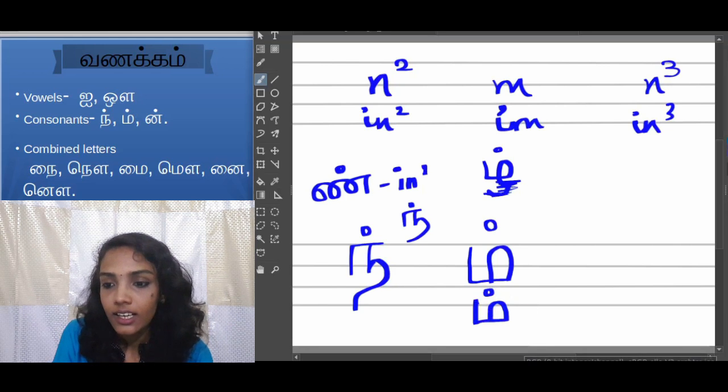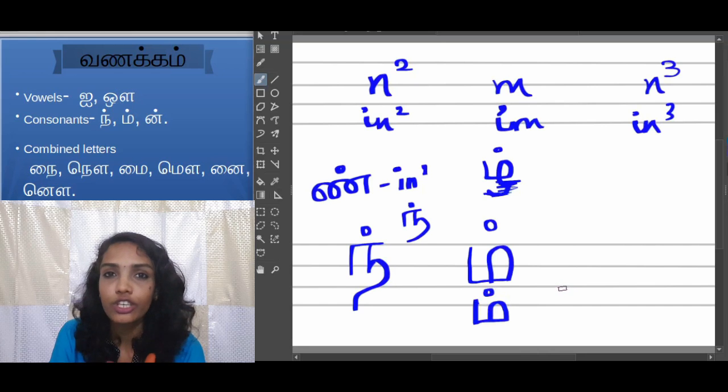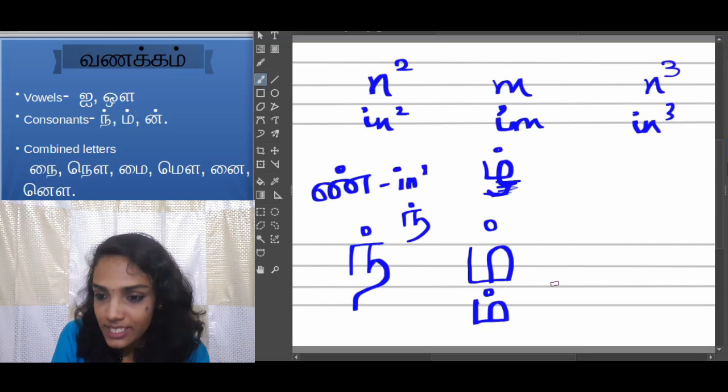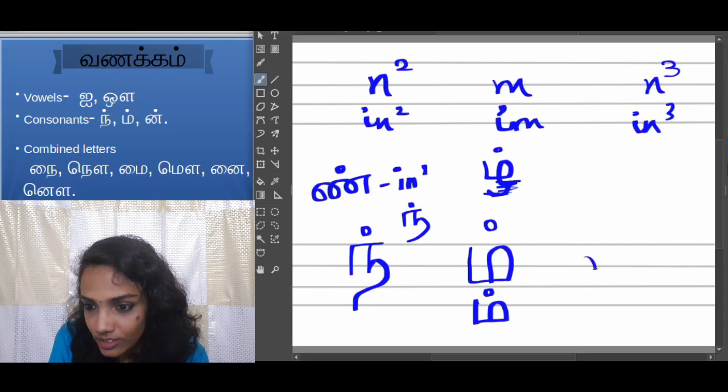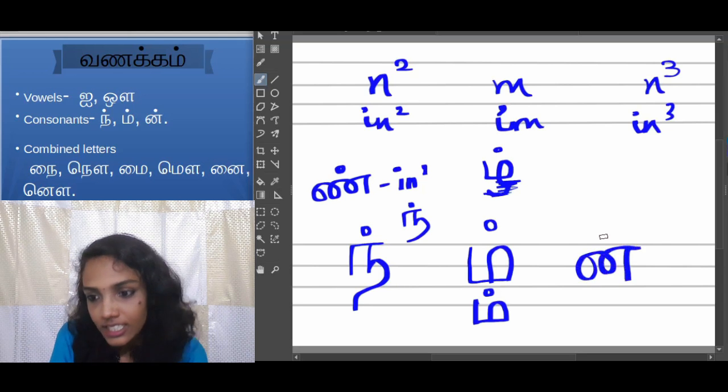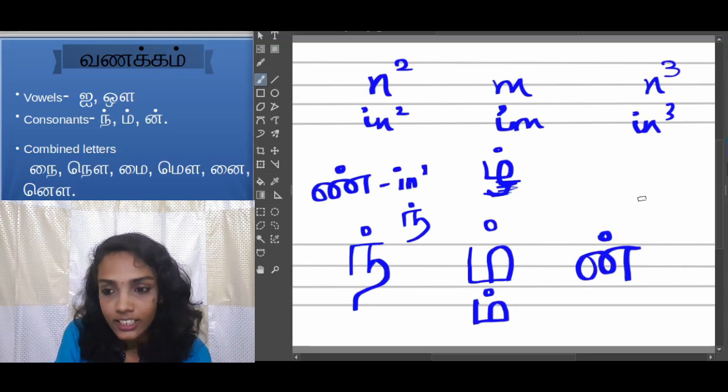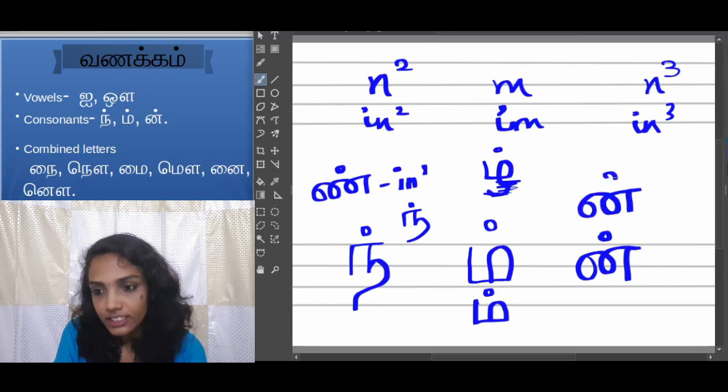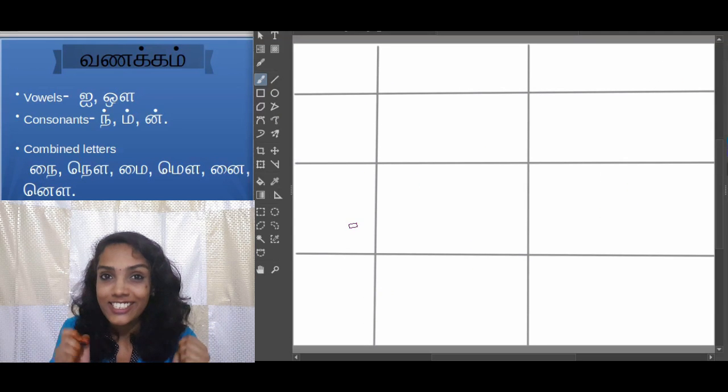Moving on to N3. N3 is similar to that of N1. In N1 we had three bubbles but here we have only two bubbles. So this is N. That's it, N3. Writing this again. That's all.